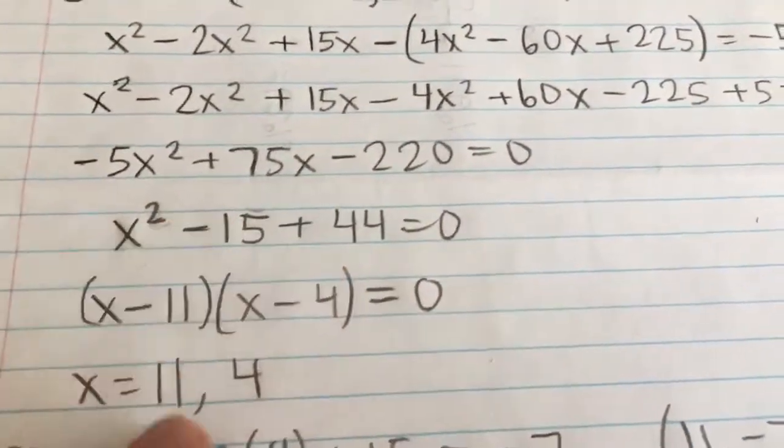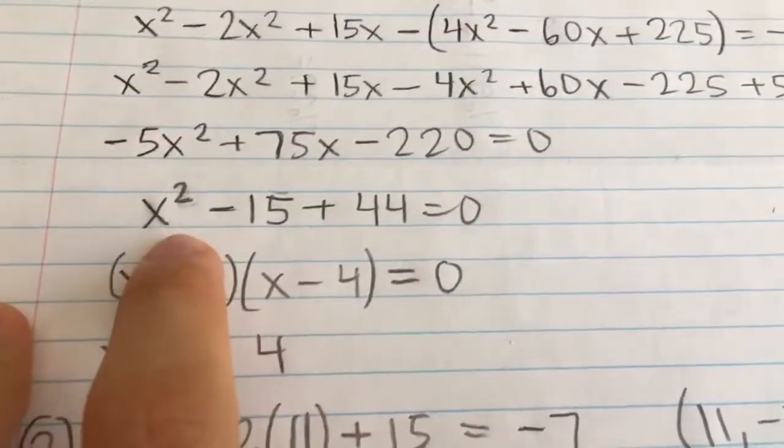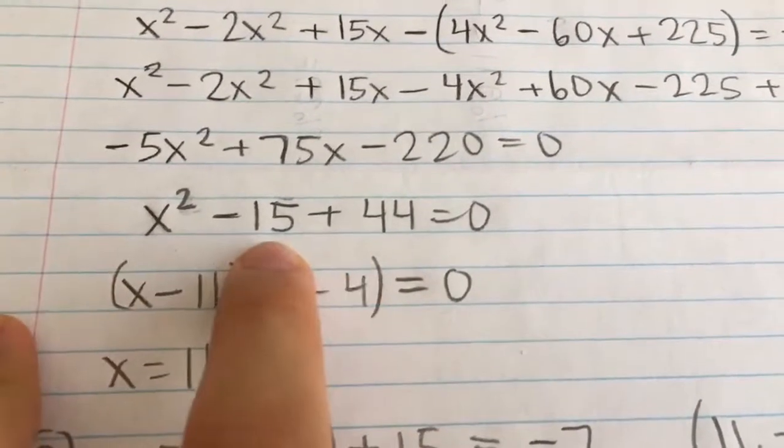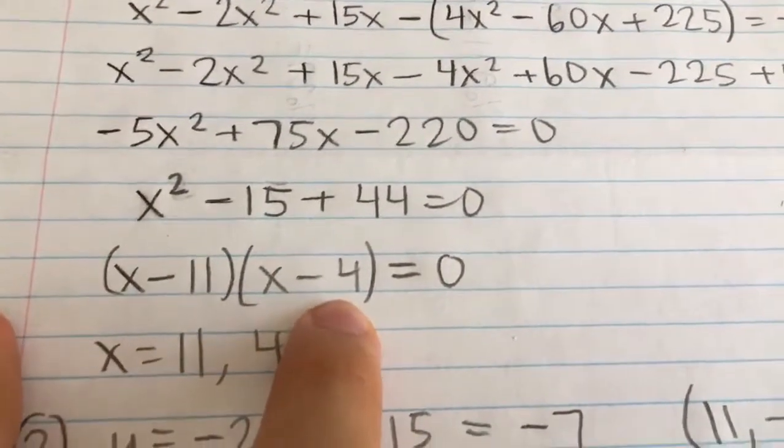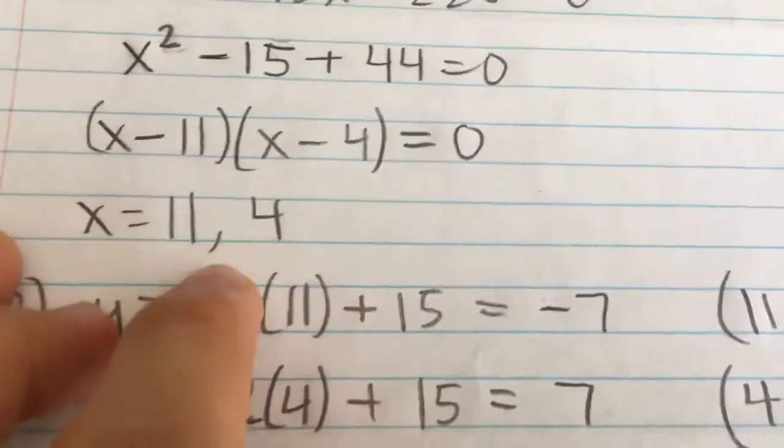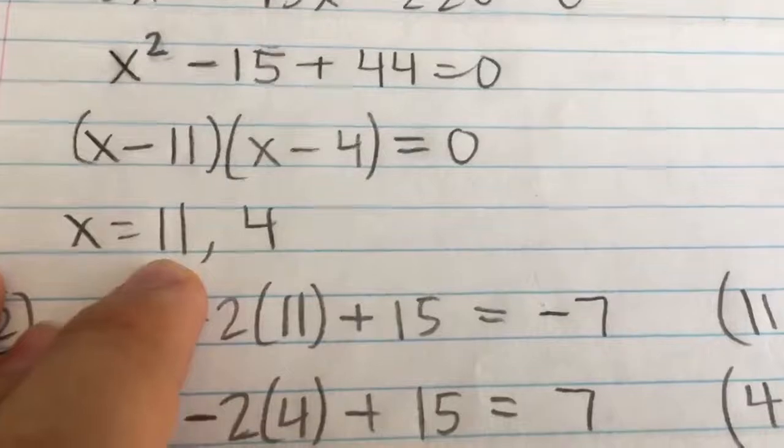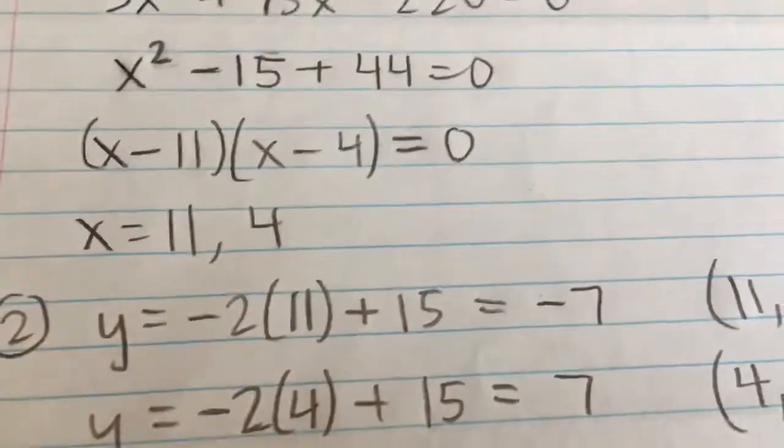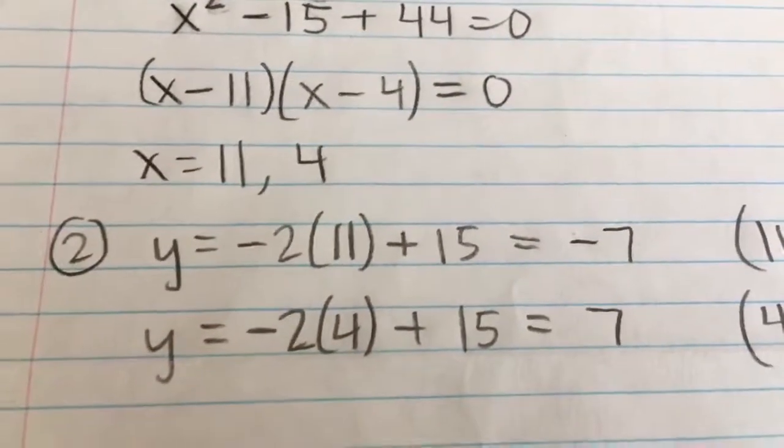If all of these are divided by negative 5, then I can factor this quadratic into x minus 11 times x minus 4 equal to 0. So either of these has to be equal to 0, and so either x equals 11 or x equals 4. Those are the x coordinates that are solutions.